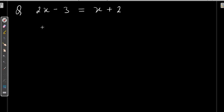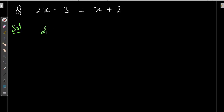So here, as you can see, this equation contains variables on both sides. Up till now, we have learned how to solve equations where the variable is only on one side — either the left-hand side or the right-hand side. Now, always remember: always take the variable on one side and the number on the other side.